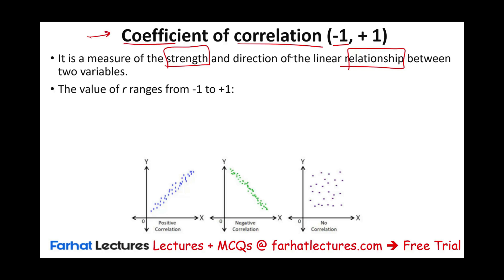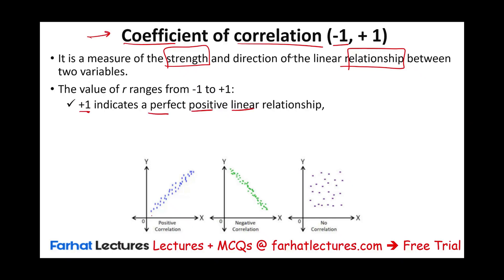The value can range from negative one to one. If the coefficient of correlation is positive one, it means there is a perfect positive linear relationship — for every dollar increase in marketing, sales increase by a dollar. This is the perfect linear relationship. Seldom is there a perfect linear relationship, but the maximum positive relationship is one. So if I increase marketing by a million, sales go up by a million.